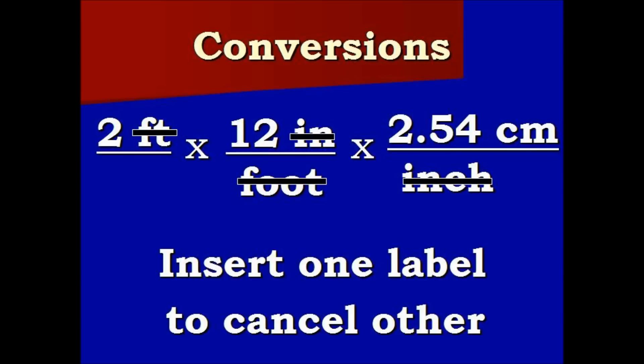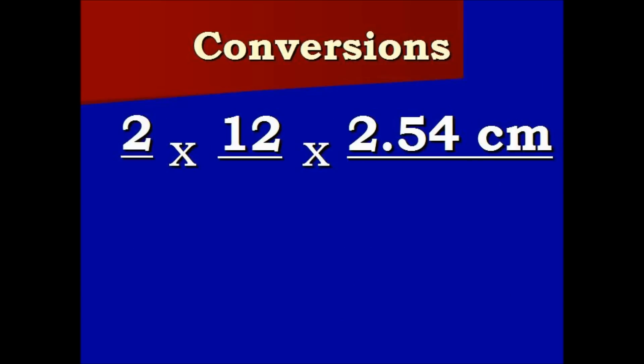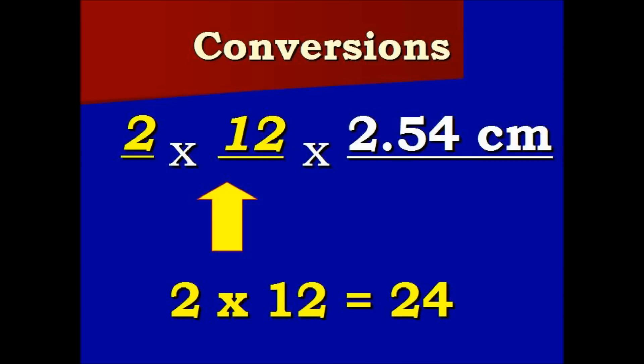The feet cancel out, the inches cancel out. So now we're left with what we're looking for, which are the centimeters. Now what we do is we multiply the values that are left. Two times twelve equals twenty-four. We plug that in.